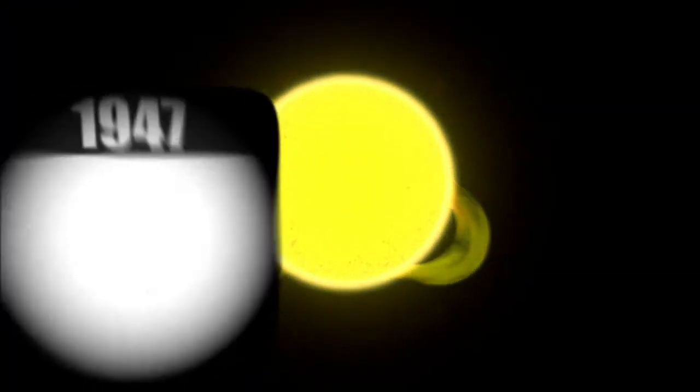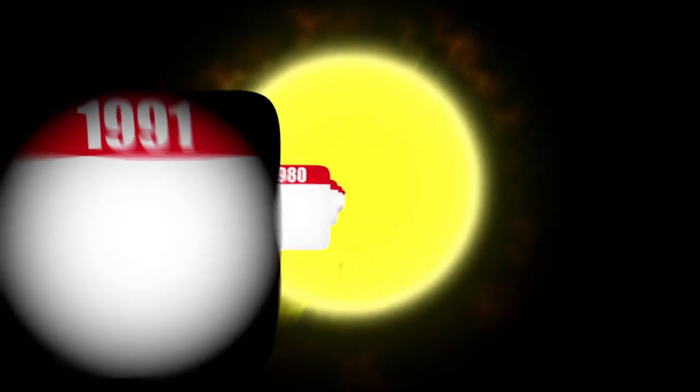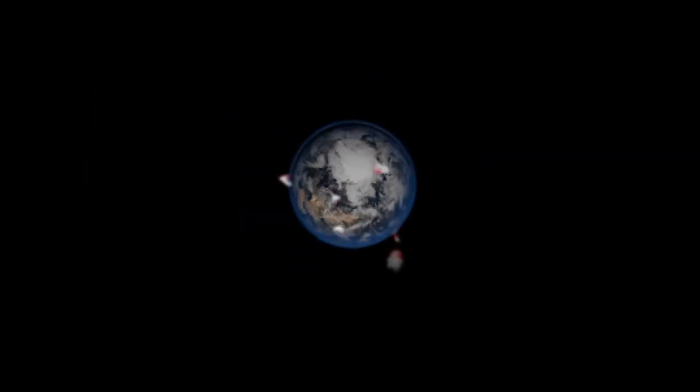Each solar cycle appears to last an average 11 years, culminating in serious magnetic storms. The current cycle is due to reach a climax in 2013. Scientists are already warning of potential disruption to terrestrial communication systems.